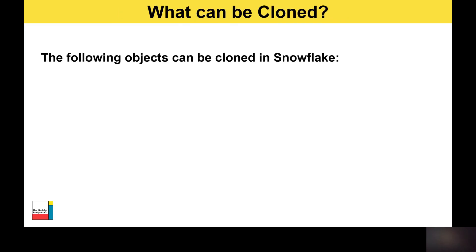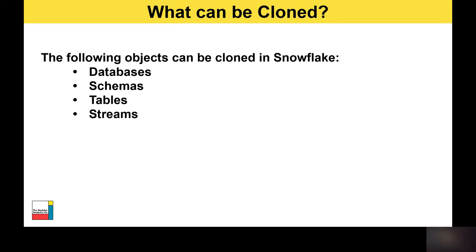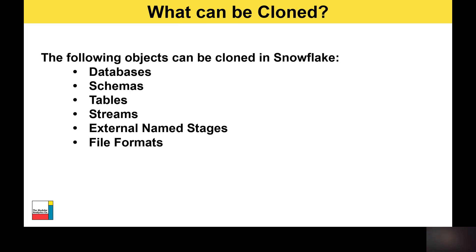What objects can be cloned in Snowflake? Databases, schemas, and tables as already mentioned. Streams can be cloned — bear in mind that any unconsumed records in the stream are not available for consumption in the clone, so the stream starts again from the point it was created. External named stages can be cloned — this has no impact on the contents of the external storage location, it's simply a pointer to where that storage is held within your third-party cloud provider. File formats, tasks, and pipes can also be cloned.